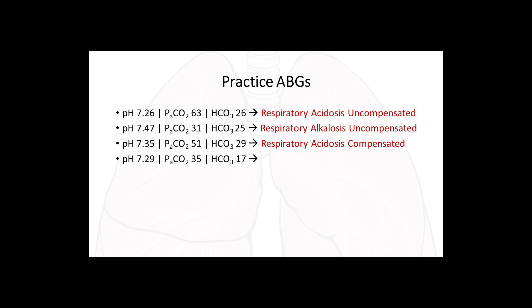Example four: pH 7.29 — below 7.35, acidotic. PaCO2 35 — on the low side of normal. Bicarb 17 — low, meaning less base, which increases acidity. The acidity is coming from the bicarb level, not the PaCO2. Since the pH is not normal, this is uncompensated metabolic acidosis.